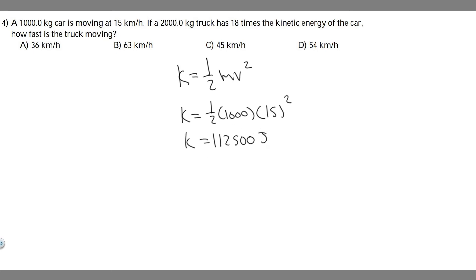We know the kinetic energy formula is 1/2 mv squared. We know the kinetic energy of this car, the 2,000-kilogram one, is going to have 18 times the kinetic energy of the first one. So if we multiply this by 18, that's going to give us the kinetic energy of this car.